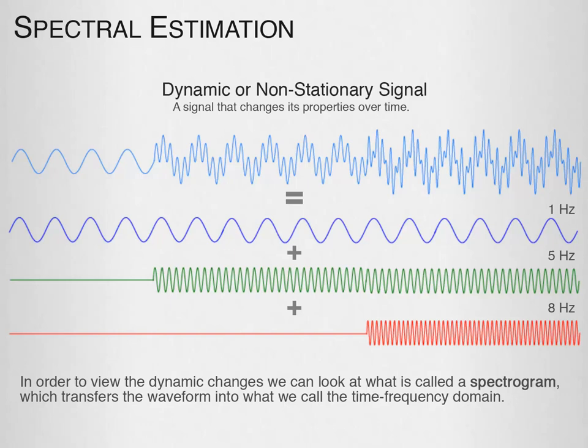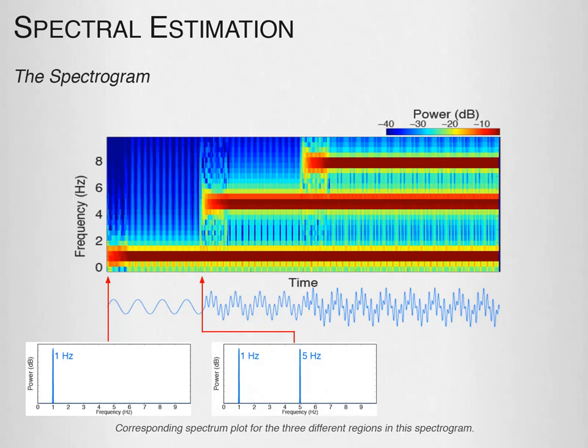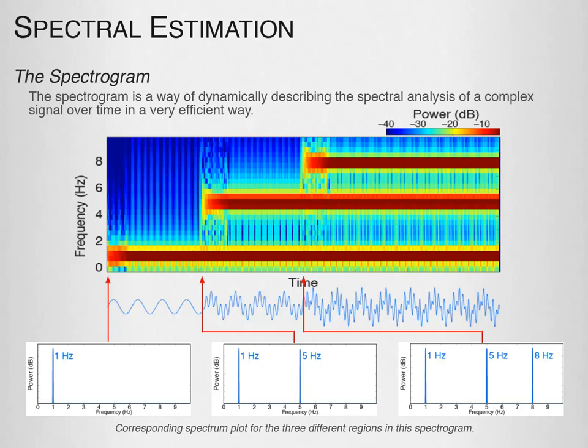In the spectrogram, the x-axis is time, and at every time point we see the associated power spectrum. The y-axis denotes frequency, and the color represents power — the hotter the color, the greater the power. In this case, we see a strong band at 1 Hz on for the full duration, a band at 5 Hz starting a little later, and an 8 Hz band starting even later. The spectrogram dynamically describes the spectral analysis of a complex signal over time in a very efficient way.